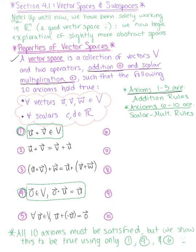Then six through ten are the scalar multiplication rules. Number six, the most important one, is the scalar c multiplied by vector u should be in the vector space. We then have scalar c multiplied by the sum of vector u and vector v is equal to the sum of these scalar multiples.